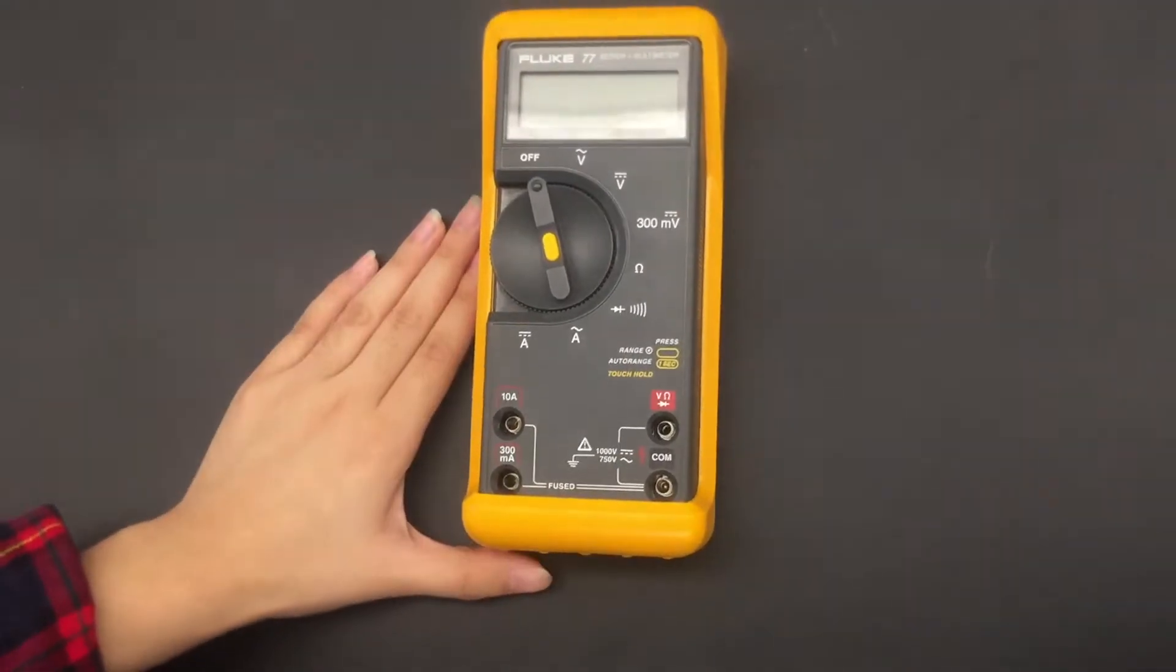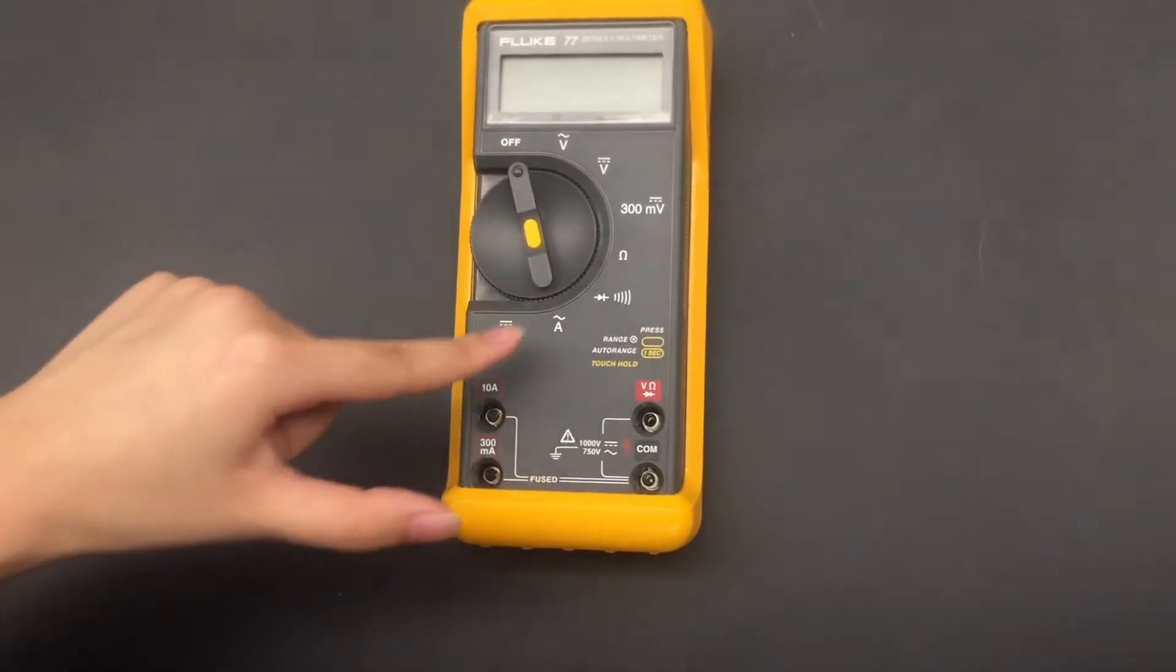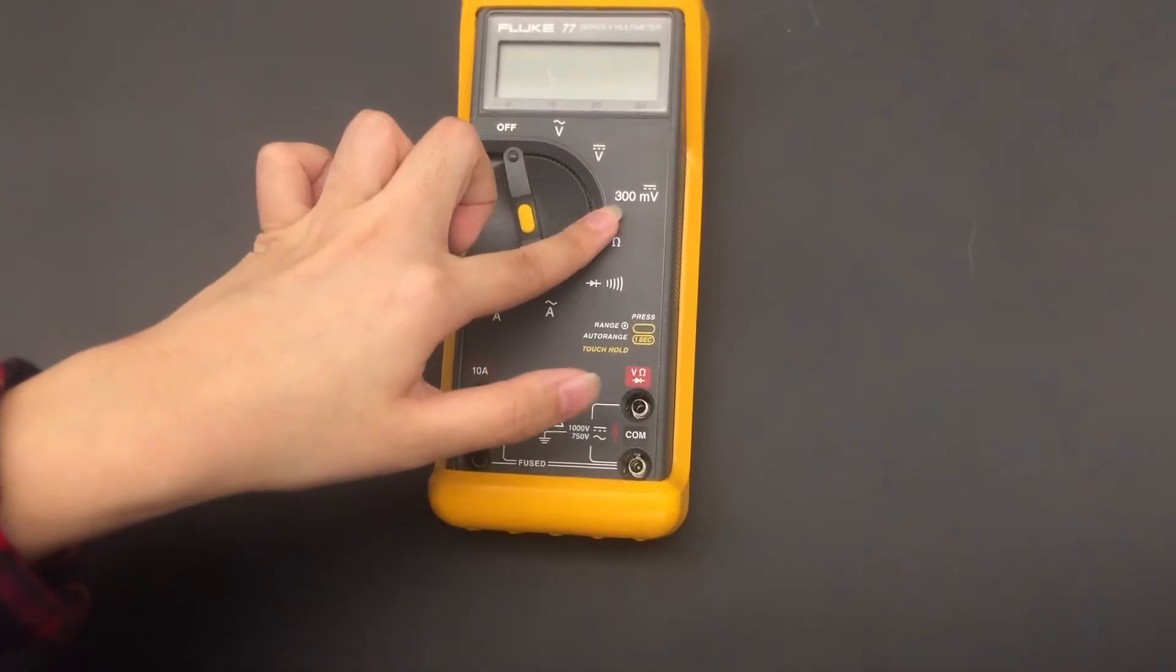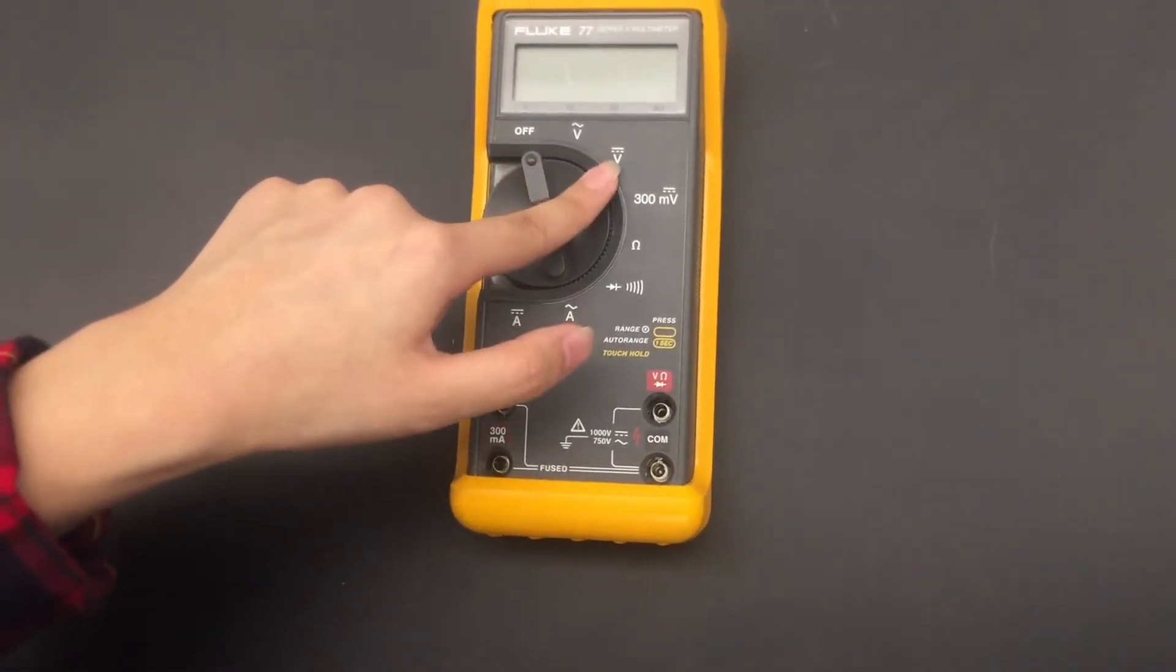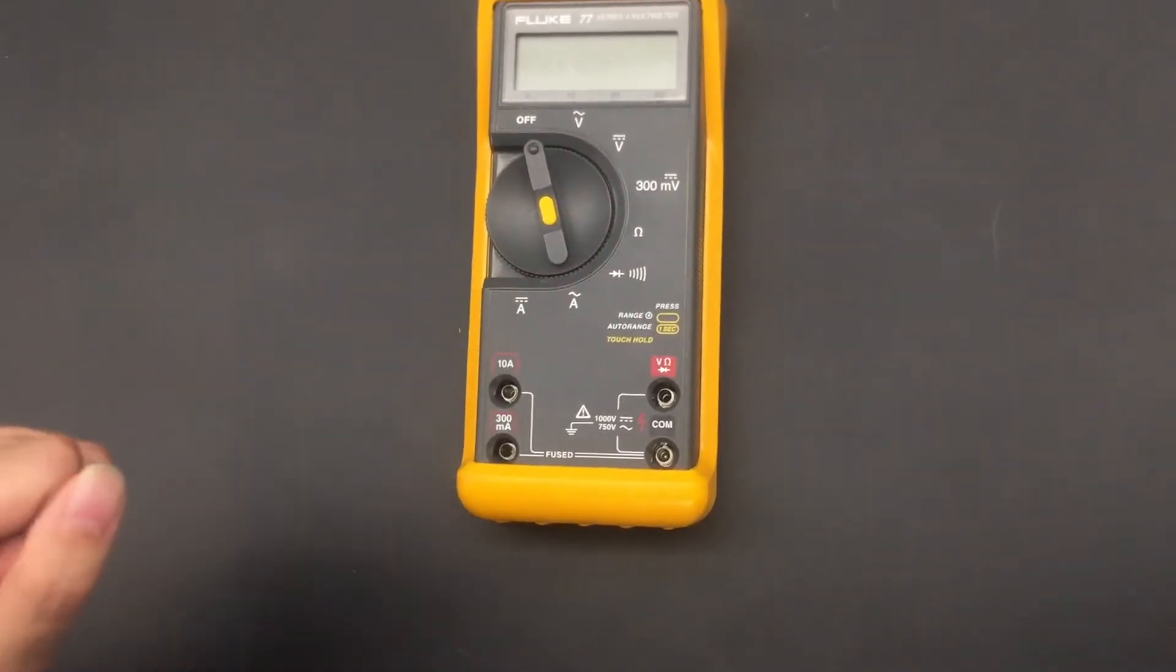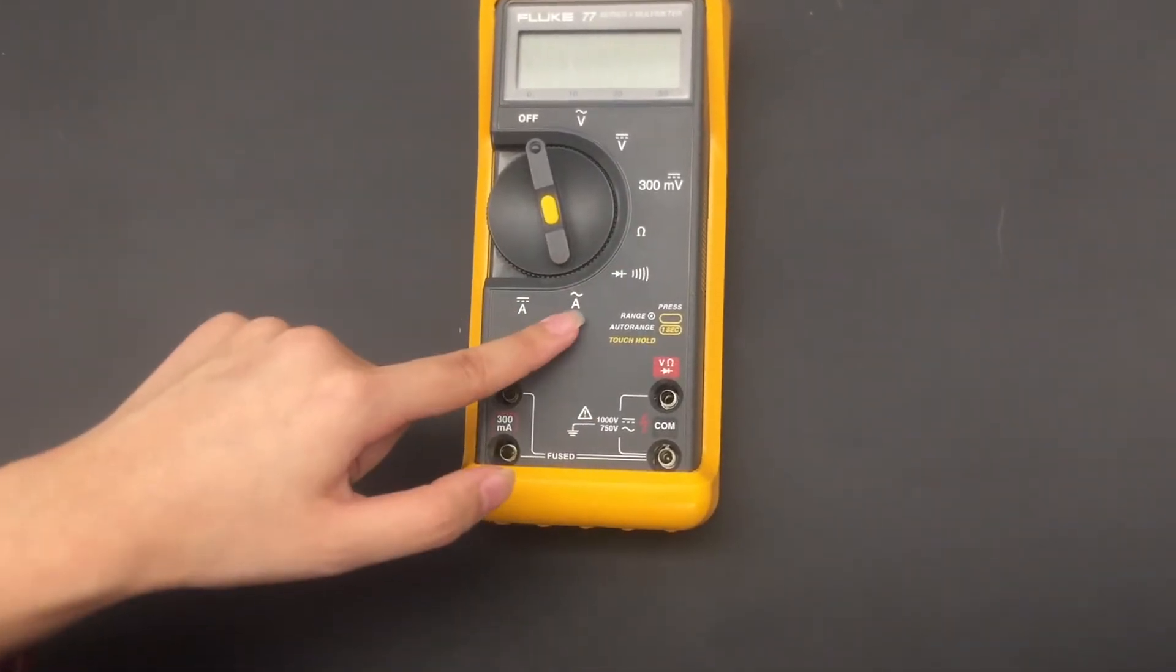So this is the Fluke 77 multimeter. As you can see, it can read voltage, resistance, and current. These three are voltage settings: this means voltage in AC, this is voltage in DC, and this will read voltage in DC with millivolts as the units. This will tell us resistance in ohms, and then this is current in AC and current in DC.